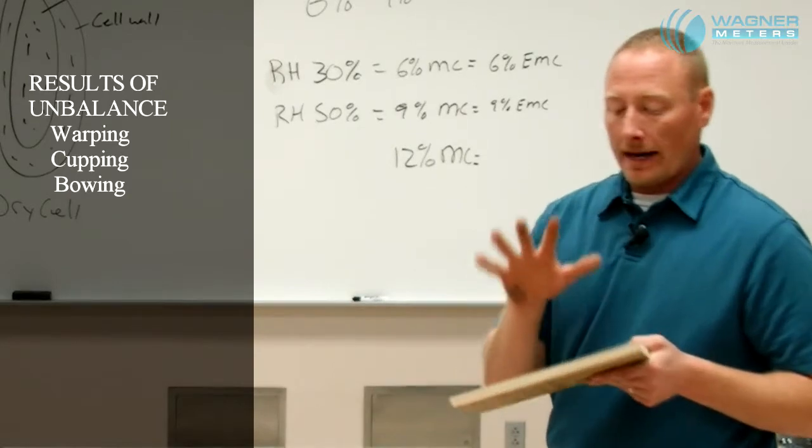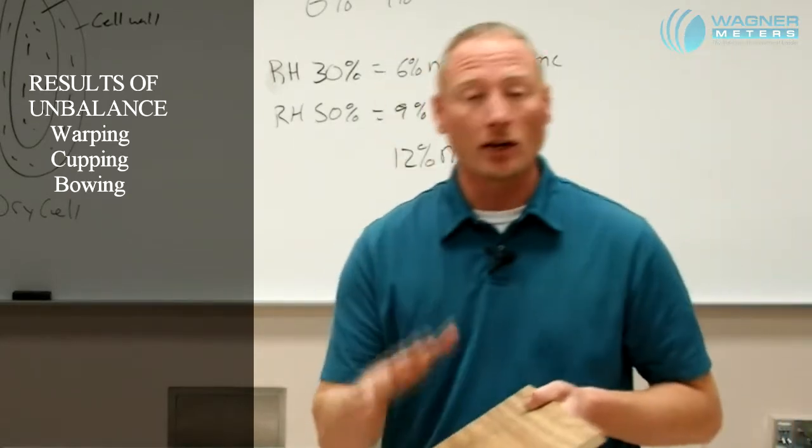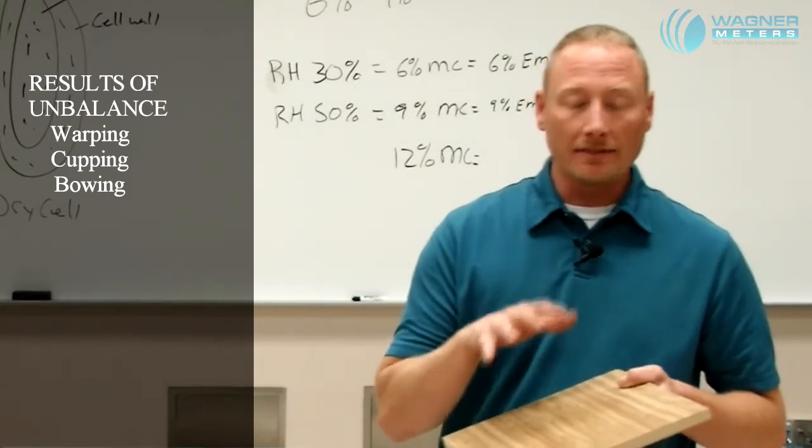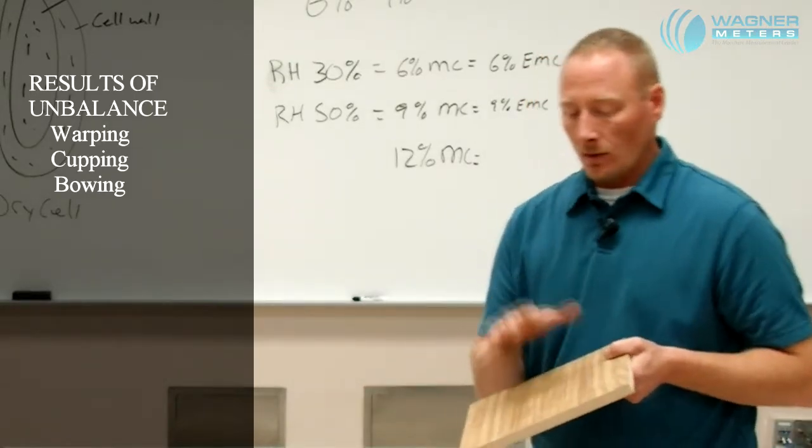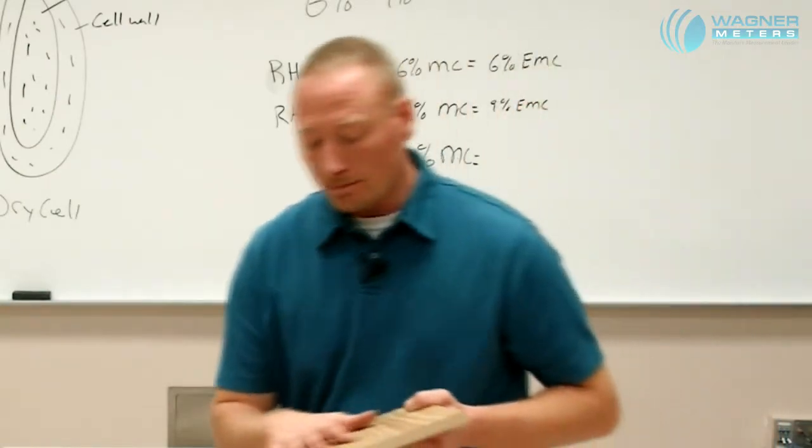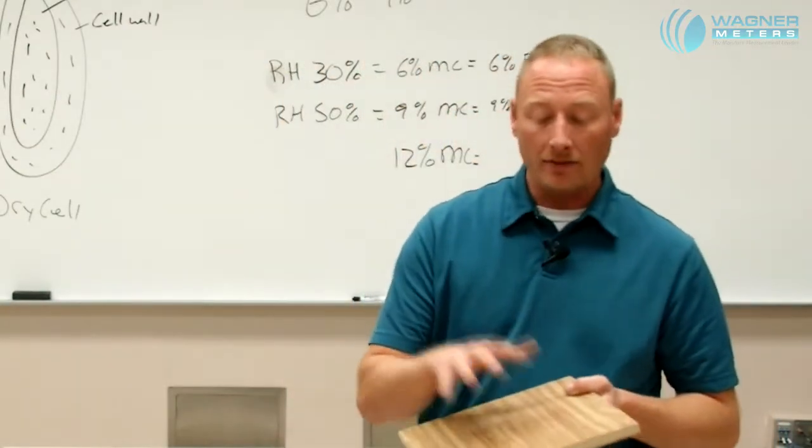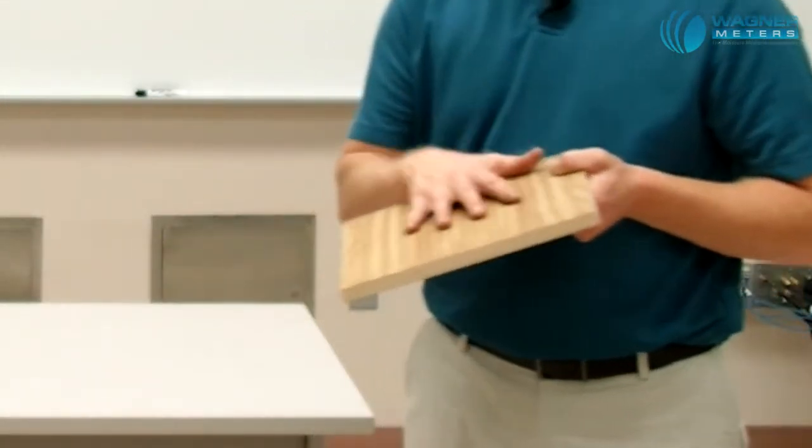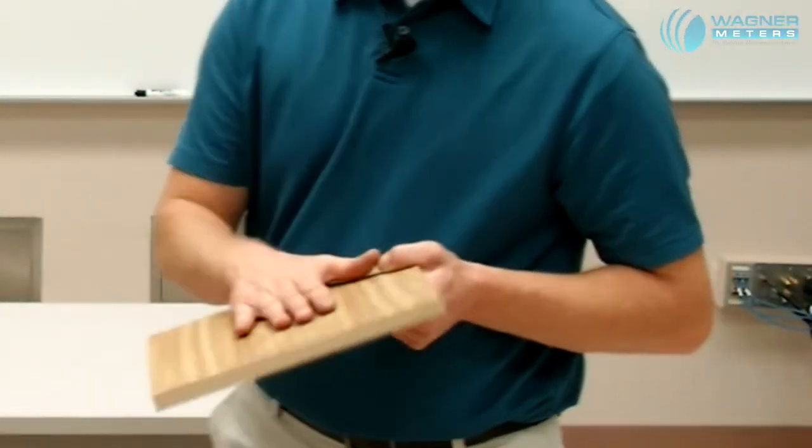So by not finishing or not applying a veneer or laminate on one side is going to lead to very, very big problems within that panel. So it's always important, whether finishing or applying a coating or applying a veneer or applying a laminate, that we coat or we apply a veneer to both sides. The same thing as with a finish.